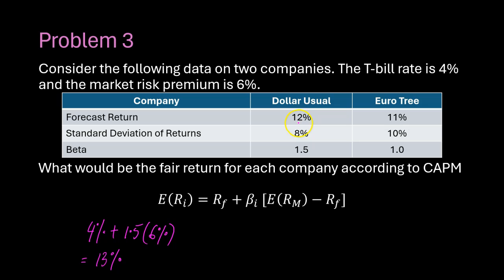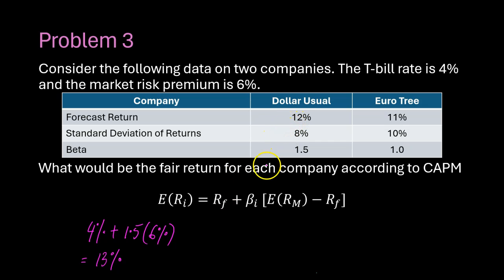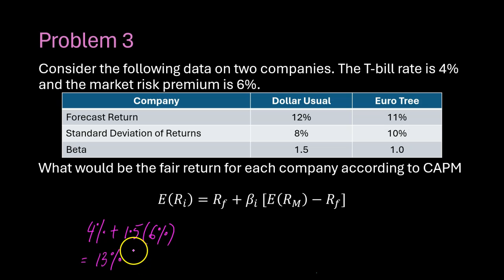If analysts' expectations are reflected in the stock market right now, so that someone buying the stock today would get 12%, CAPM would say the stock is overpriced. In other words, its price should be lower — low enough so that when investors buy at that price, they expect a rate of return of 13%. So in this case, the stock of Dollar Usual is overpriced given the risk of the security.